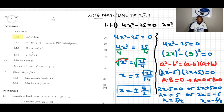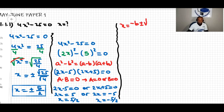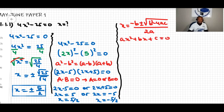We can also use the quadratic formula. The quadratic formula is given by x equals minus b plus or minus the square root of b squared minus 4ac, all over 2a. The standard quadratic equation is ax squared plus bx plus c equals zero.